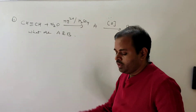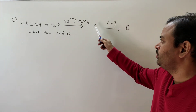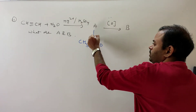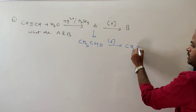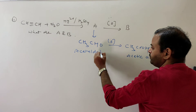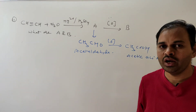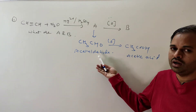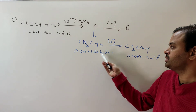Eleventh question: acetylene on hydrolysis in presence of Hg2+ and H2SO4 gives A, which on oxidation gives B. A is CH3CHO (acetaldehyde). Acetaldehyde on oxidation gives B, which is CH3COOH (acetic acid). Acetylene undergoes hydrolysis in presence of Hg2+ and H2SO4 to give acetaldehyde first, and aldehyde is very prone to oxidation, so it readily converts to acetic acid.